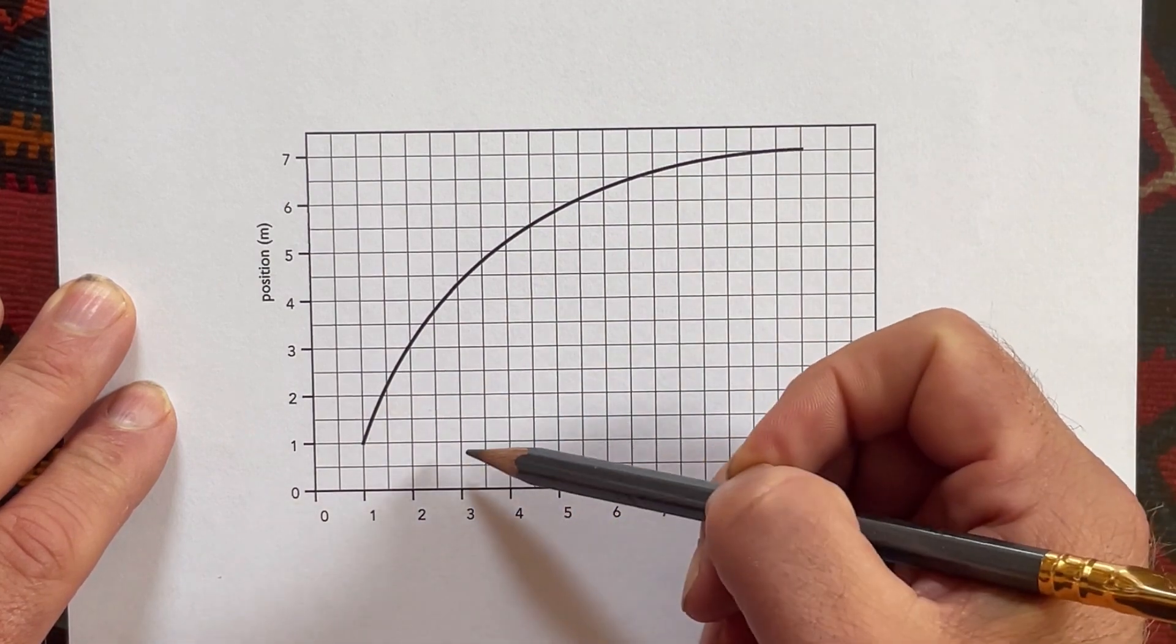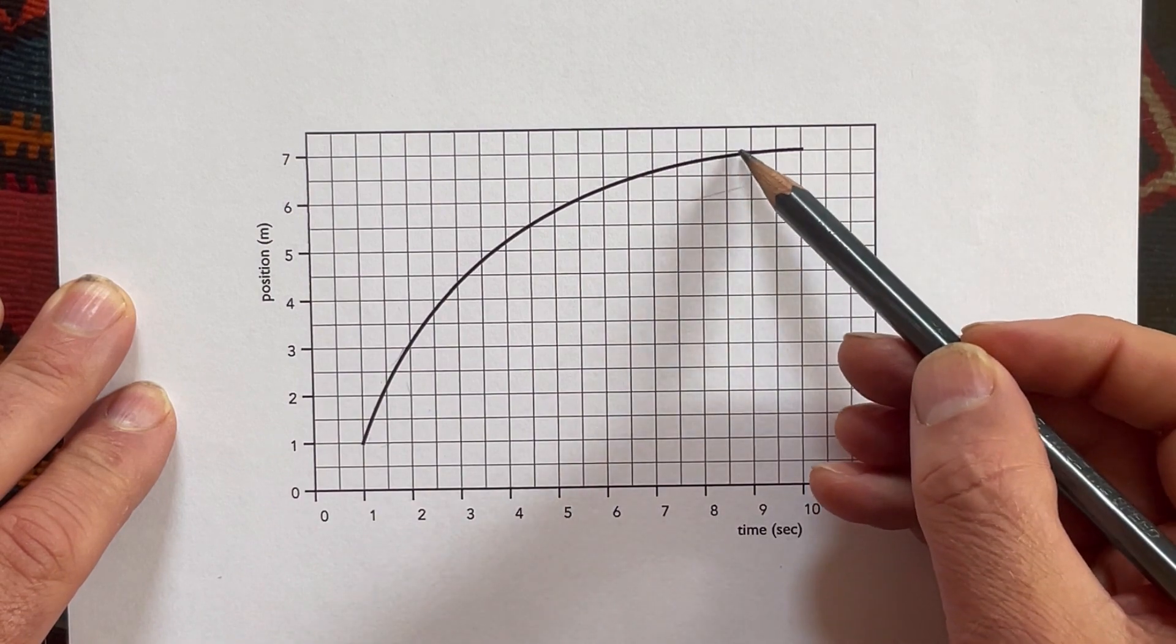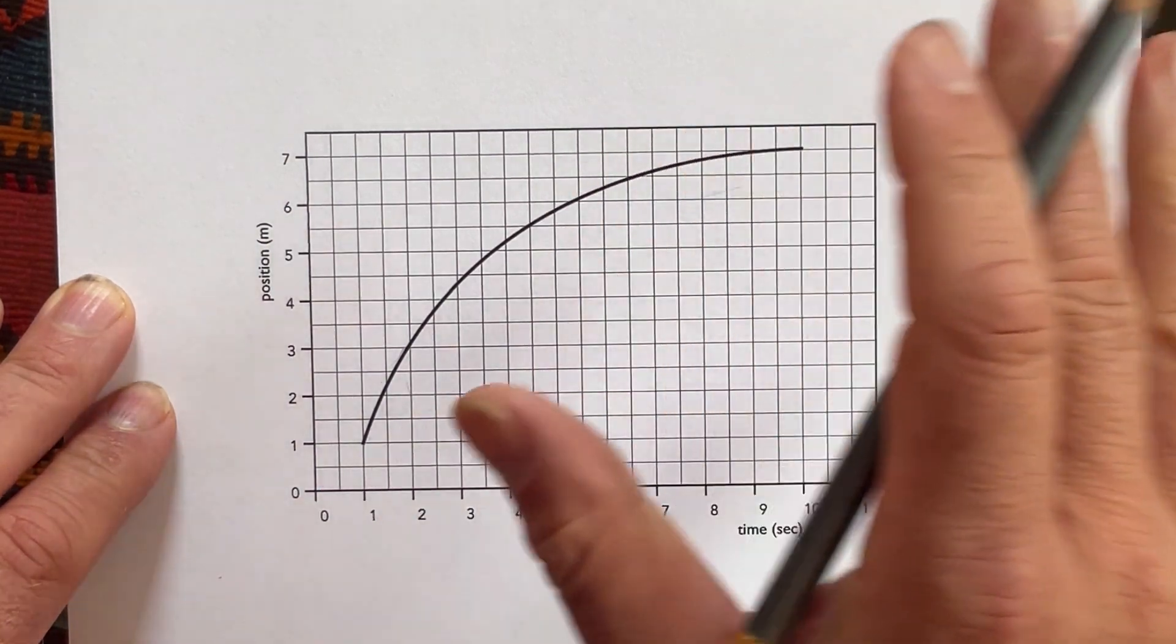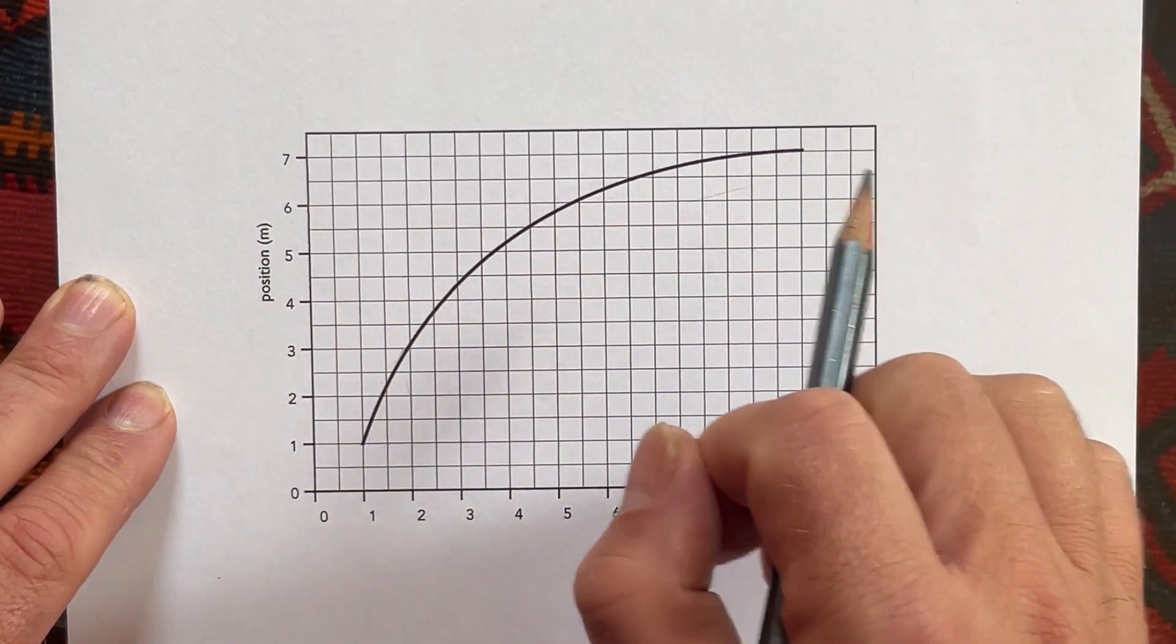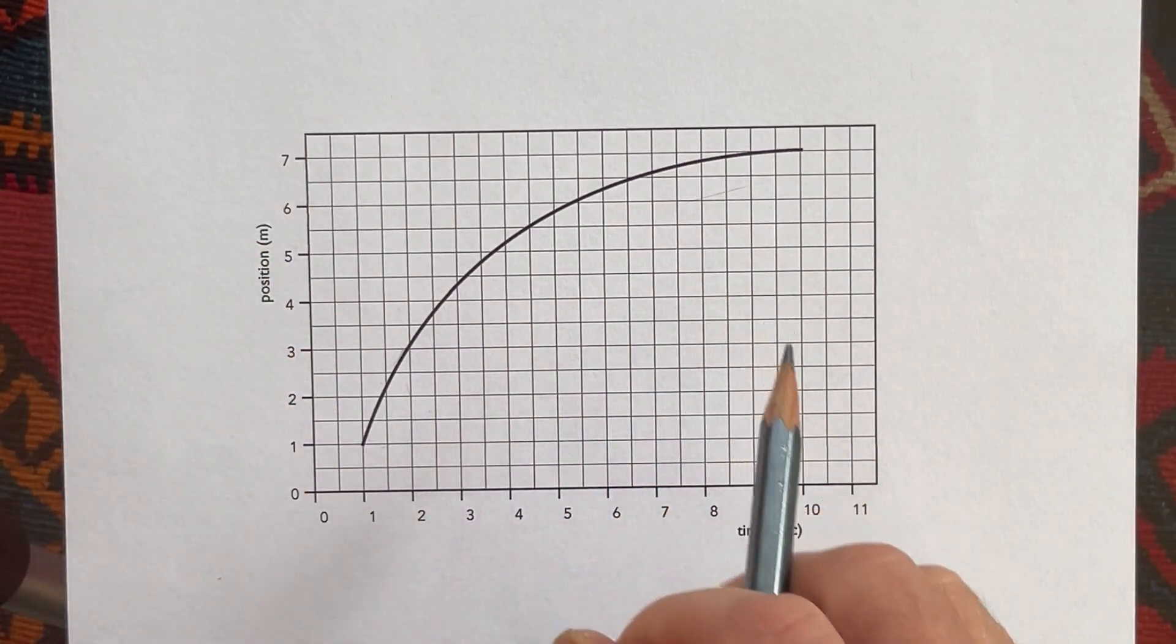We can also tell that this is something that's slowing down because down here it's steep, up here it's not as steep. But just how fast is it actually going? That's something that we can actually calculate numerically, and we're going to do that right now.